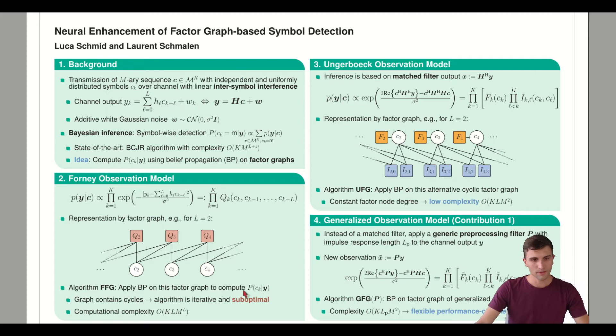The problem is that this graph contains cycles, which leads to an iterative and especially suboptimal algorithm. We only get an approximation of the symbol-wise APP. Further, the computational complexity is not quite reduced compared to the BCJR algorithm. We still have this exponential dependency on L.